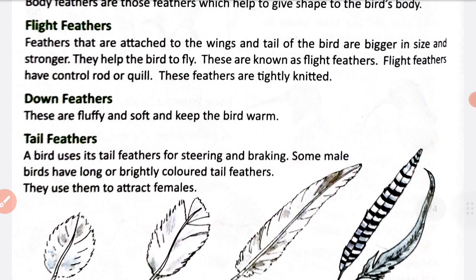The second type of feathers is flight feathers. Feathers that are attached to the wings and tail of the bird are bigger in size and stronger. Flight feathers bird ki tail and wings ke saath jode hote hain, aur inki size bigger aur stronger hoti hai. They help the bird to fly, and these are known as flight feathers.